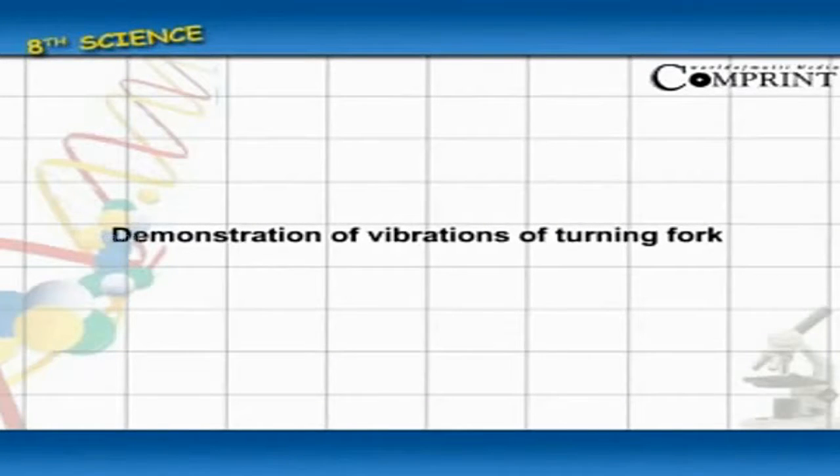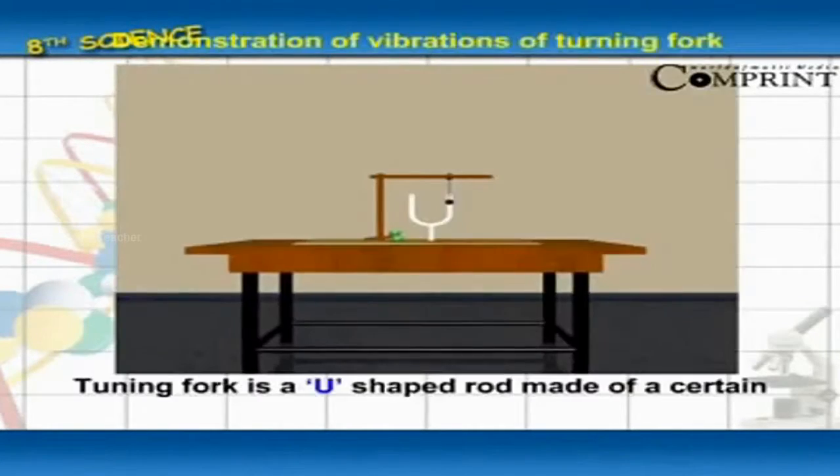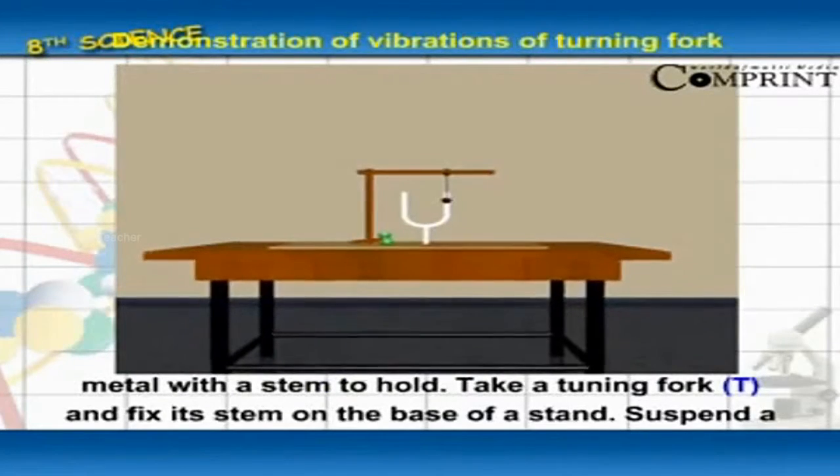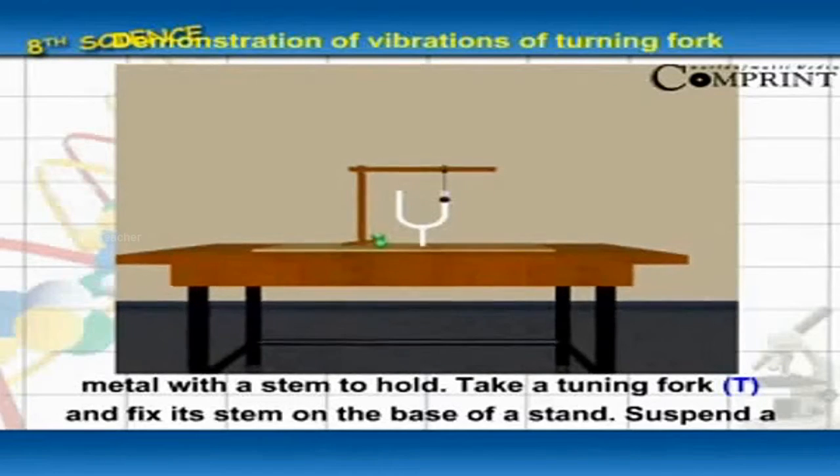Demonstration of Vibrations of a Tuning Fork. A tuning fork is a U-shaped rod made of certain metal with a stem to hold, as shown in figure 9.1.